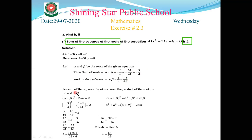Now applying the condition: sum of squares of roots equals 2, meaning alpha² + beta² = 2. We know that alpha² + beta² = (alpha + beta)² - 2(alpha×beta). Substituting: sum of roots is -3/4 and product of roots is -2/k. The roots are alpha and beta, and sum of their squares means alpha² + beta². I hope you understand why we use alpha² + beta² for the sum of squares of the roots.